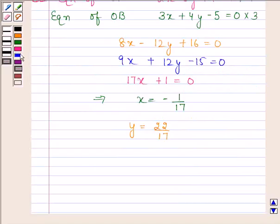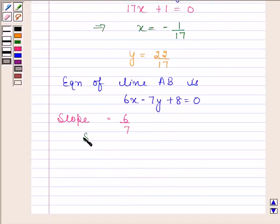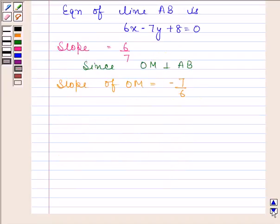Now equation of line AB is 6x minus 7y plus 8 equals 0. Slope of this line is 6 by 7. Now since OM is perpendicular to AB, therefore product of slopes of OM and AB is minus 1. Thus, slope of OM is minus 7 by 6.